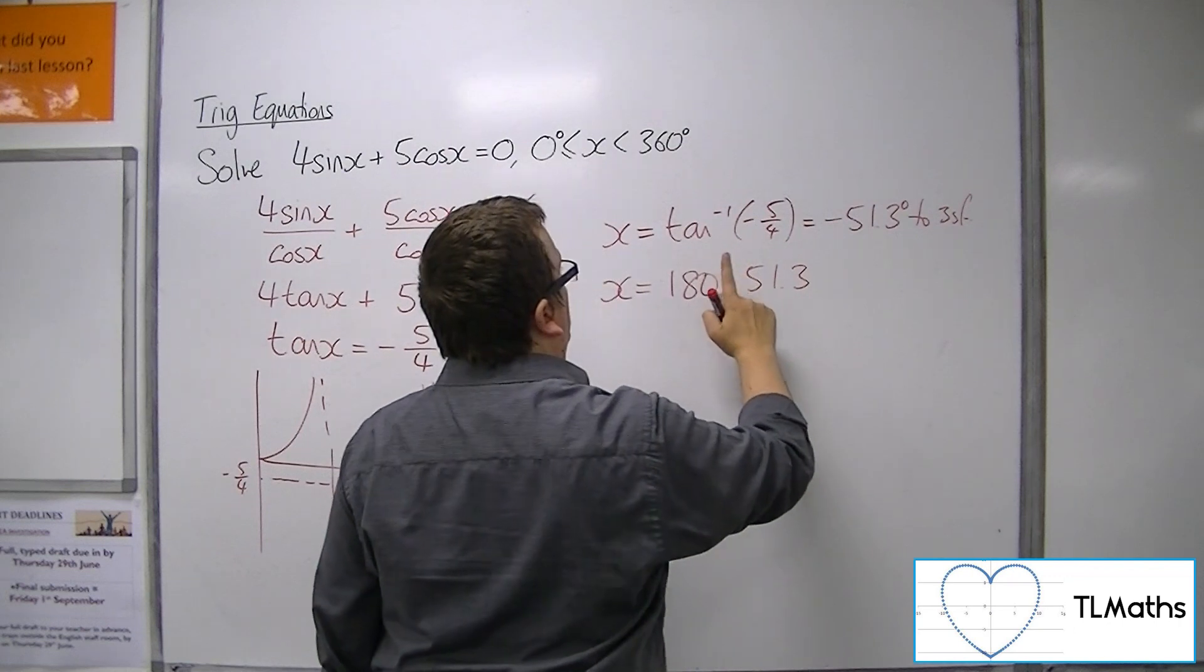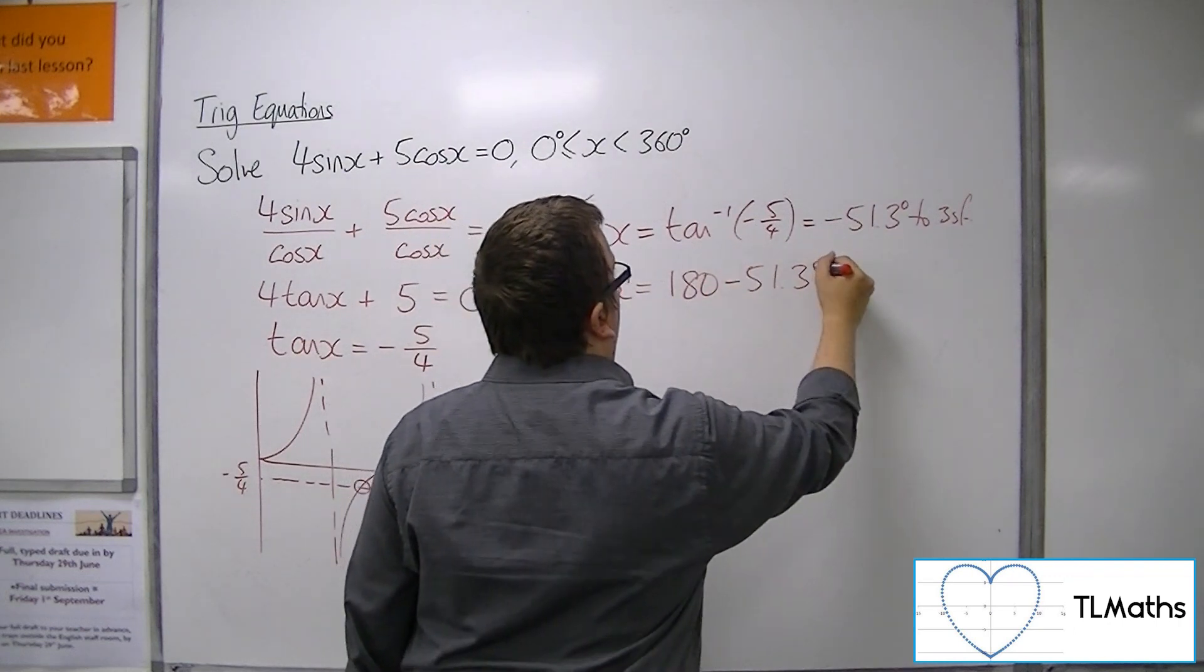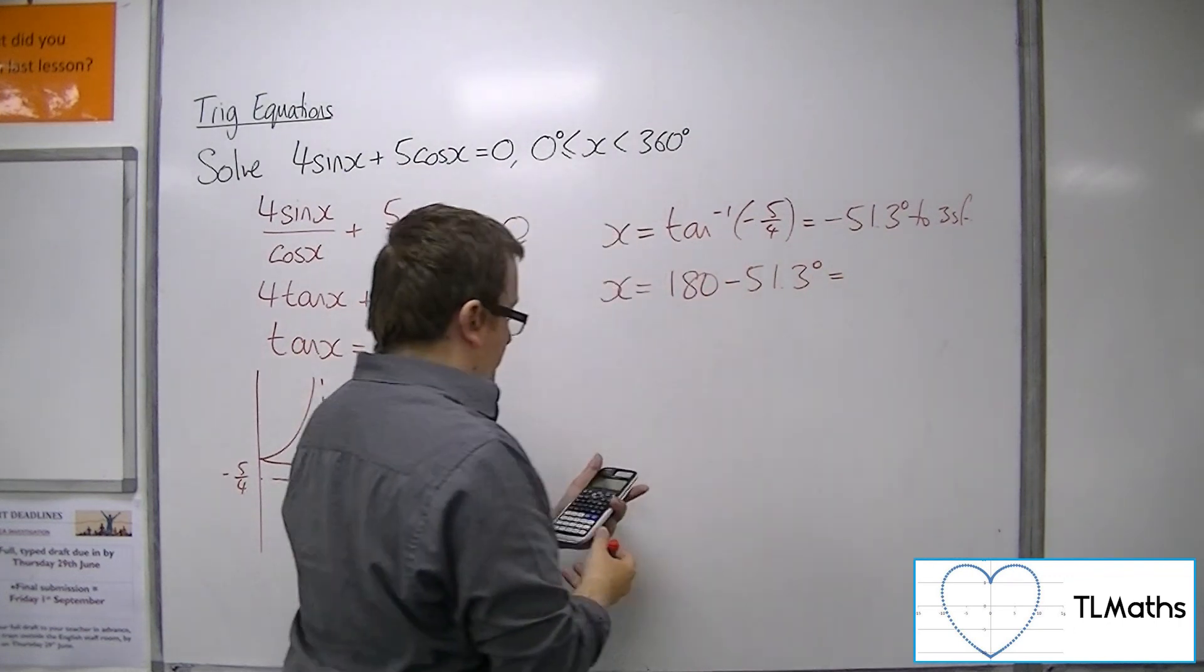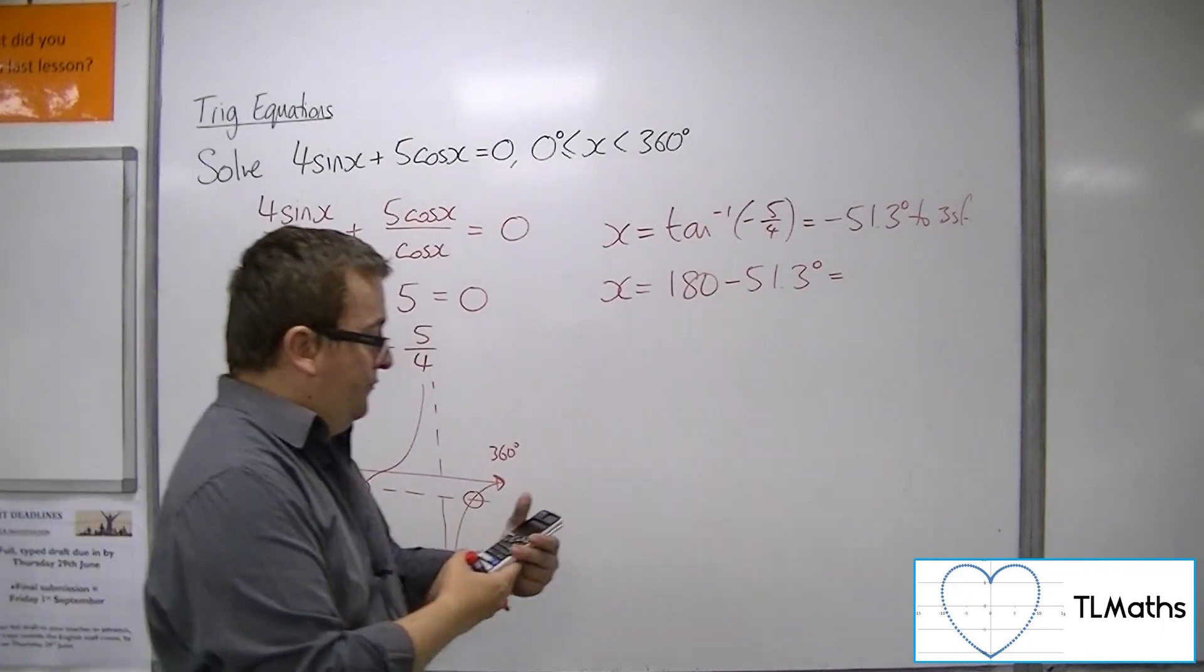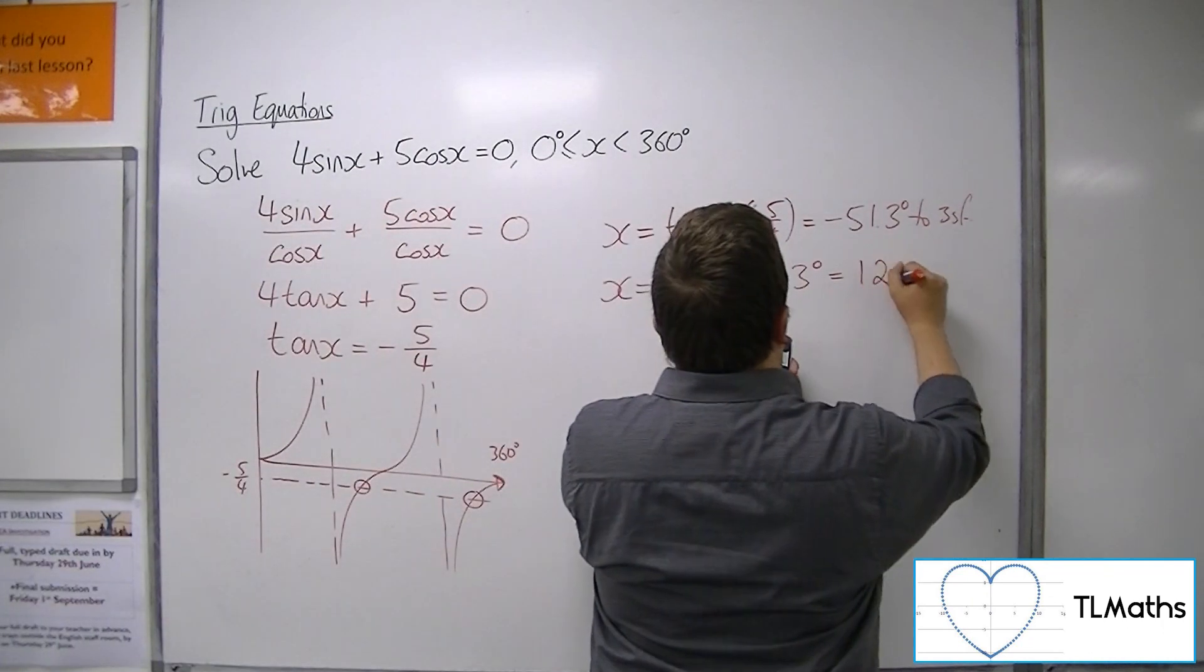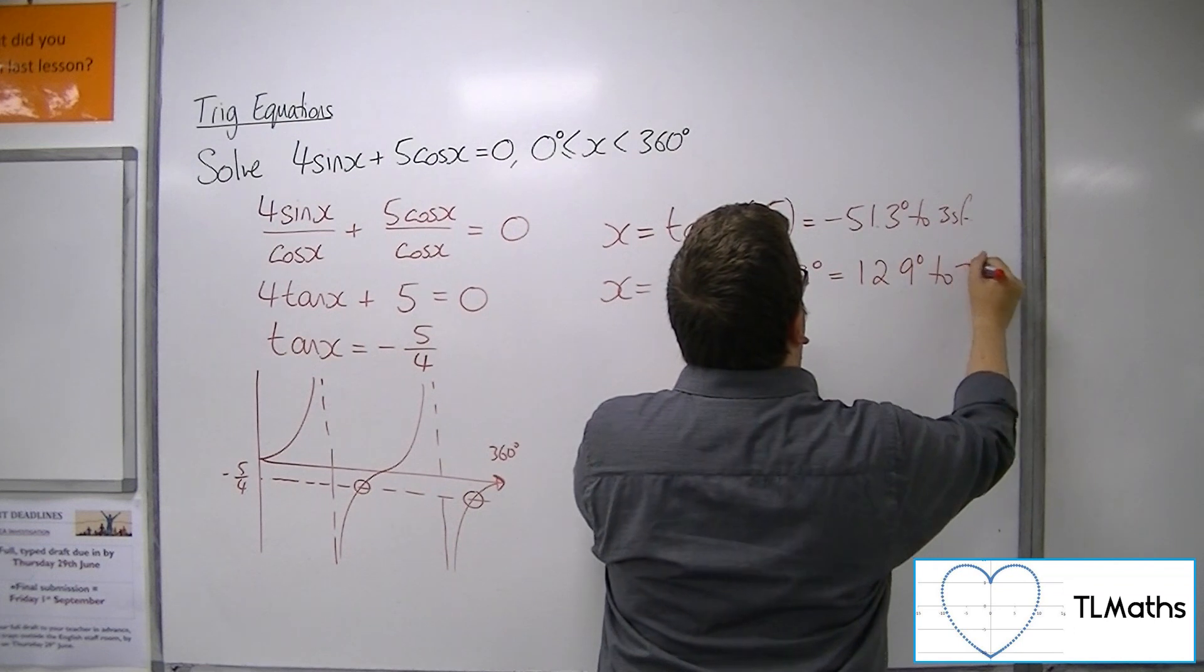Oh, sorry. So add on 180, and we get 129 degrees to 3 sig fig.